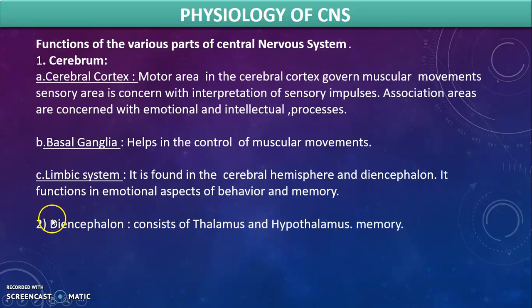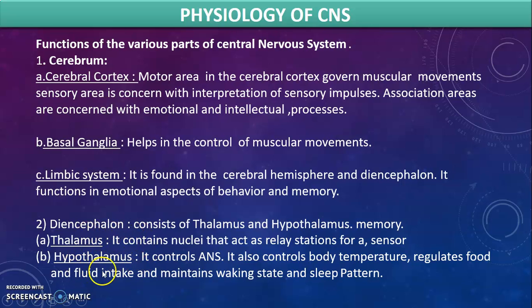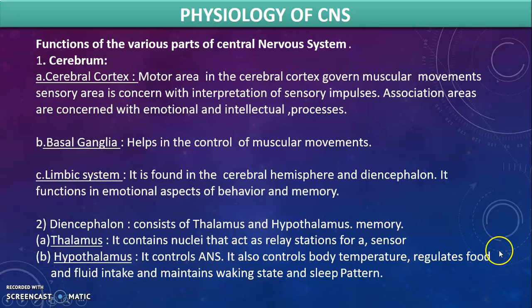The second part of the central nervous system is the diencephalon, which consists of the thalamus and hypothalamus. The thalamus contains nuclei that act as a relay station for sensory signals. The hypothalamus controls the autonomic nervous system, regulates body temperature, regulates food and fluid intake, and maintains the waking state and sleep patterns.